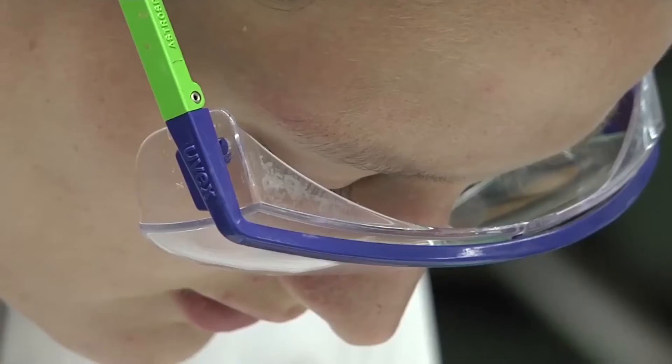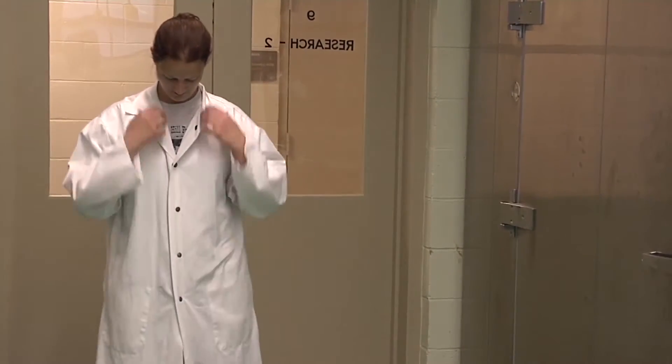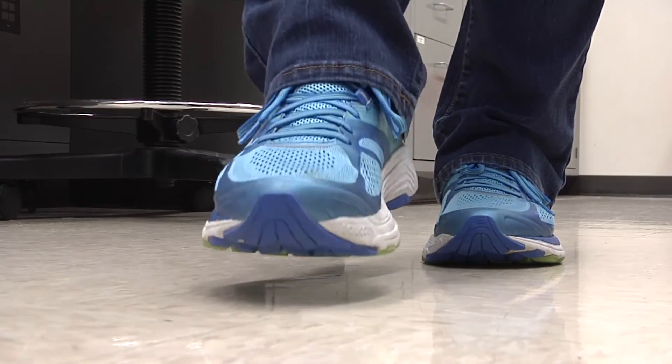Employees measuring pH should always wear eye protection, a lab coat or apron, as well as non-latex gloves and closed-toed shoes.